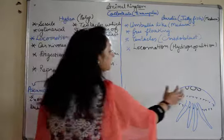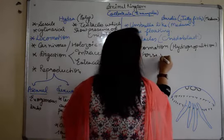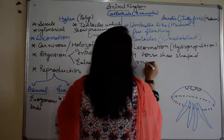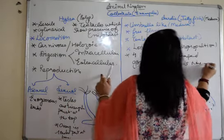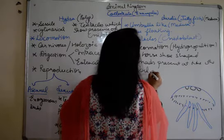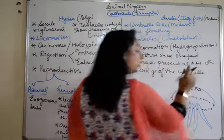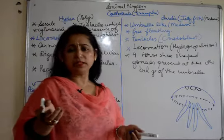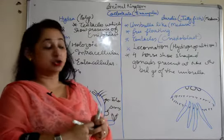The gonads: as it's transparent, there are four horseshoe-shaped gonads which are present at the bulge of the umbrella. So there are four in number. If you see a 3D structure, you can clearly see because of its transparent structure, you can see these horseshoe-shaped gonads present on the top of the bulge of umbrella.